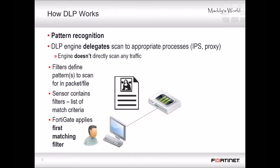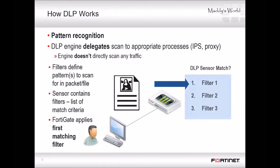How does DLP work? FortiGate scans traffic matching your firewall policy for the DLP patterns that you specify. When you configure a pattern, whether predefined or custom, DLP doesn't directly inspect traffic itself. Instead, it communicates the patterns to the proxies or IPS engine's processes which actually do the scanning. So remember that when troubleshooting, you may need to investigate flow through modules that you didn't manually enable. If the scan finds a match, it executes the filter's corresponding action.